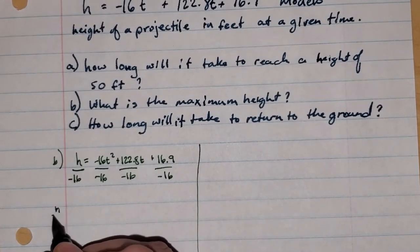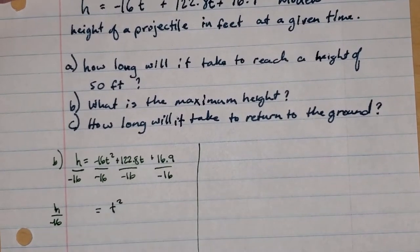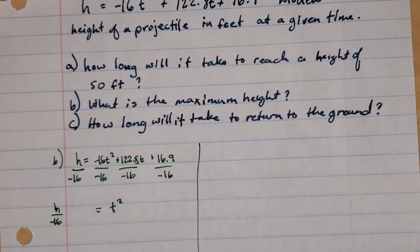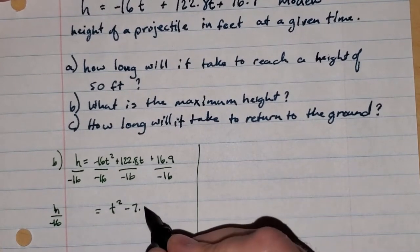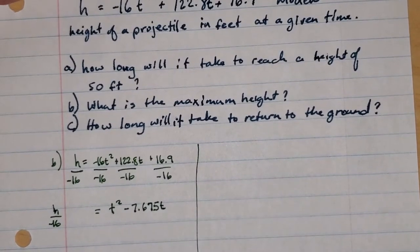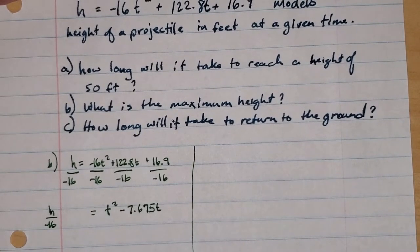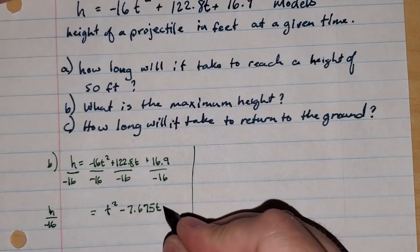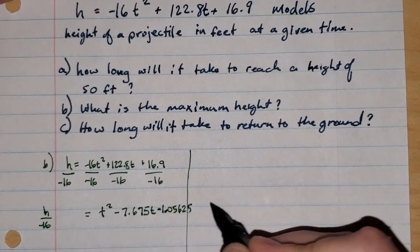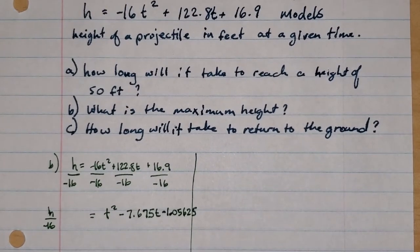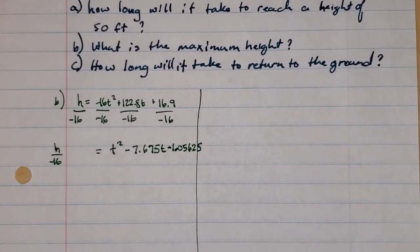After dividing by negative 16, we get H over negative 16 equals t squared. Then 122.8 divided by negative 16 gives us negative 7.675t. And 16.9 divided by 16 is approximately 1.05625, so that term becomes minus 1.05625. I'm a fan of not rounding until you get to your final answer, unless the numbers get very long, in which case you truncate a little.